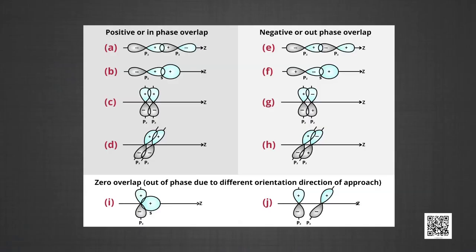Today we will study about overlapping of atomic orbitals and hybridization. The valence bond theory explains the shape, formation and directional properties of bonds in polyatomic molecules like methane, ammonia and water, in terms of overlap and hybridization of atomic orbitals. When the orbitals of two atoms come close to form a bond, their overlap may be positive, negative or zero, depending upon the sign — that is, the phase and direction of orientation — of the amplitude of the orbital wave function in space.